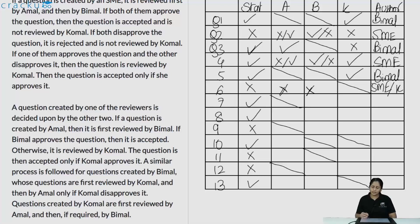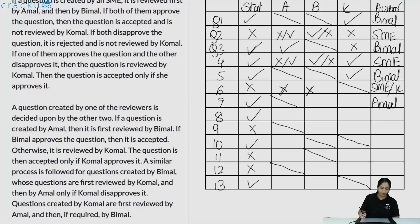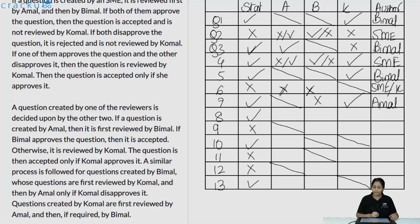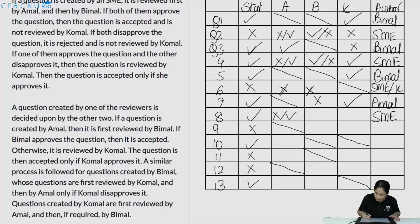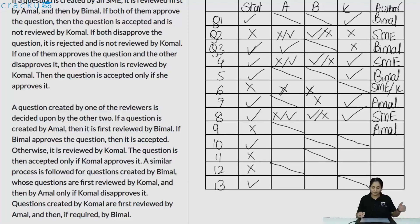Q9 was reviewed by Bimal and Komal but not Amal, and was rejected. Since Amal is absent, this must have been created by Amal. If Amal's question goes to Bimal first and Bimal rejects, it then goes to Komal. Since the final result is rejected, Komal must also have rejected it.